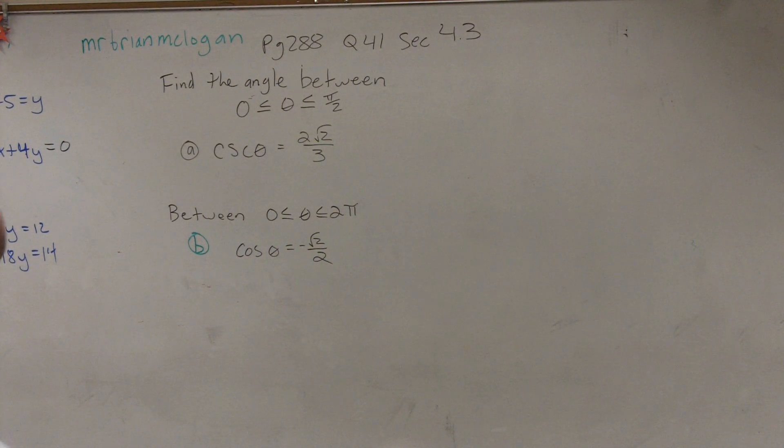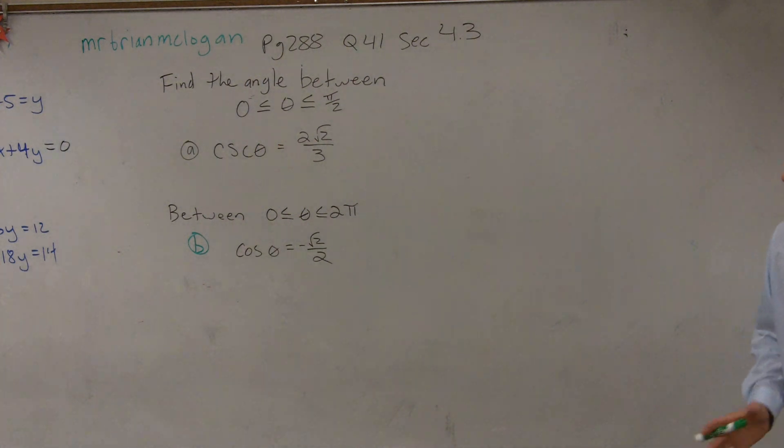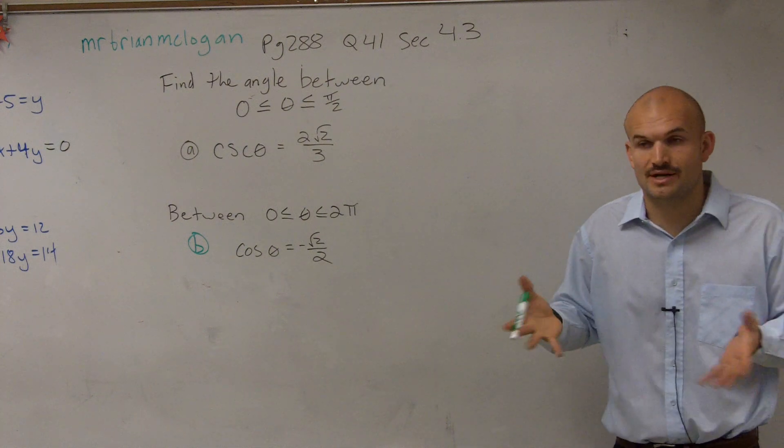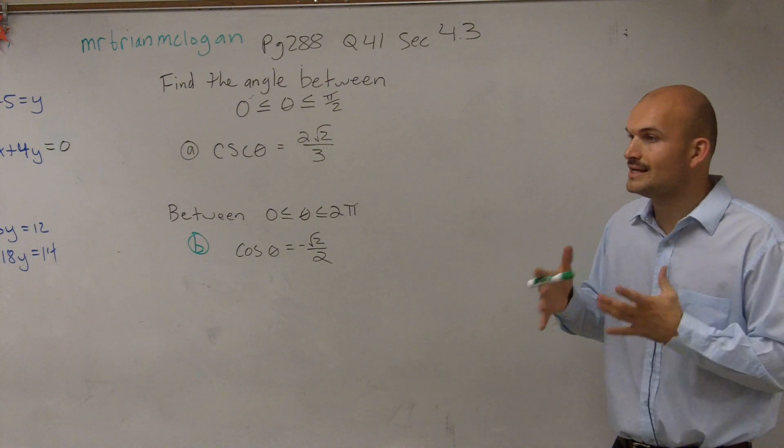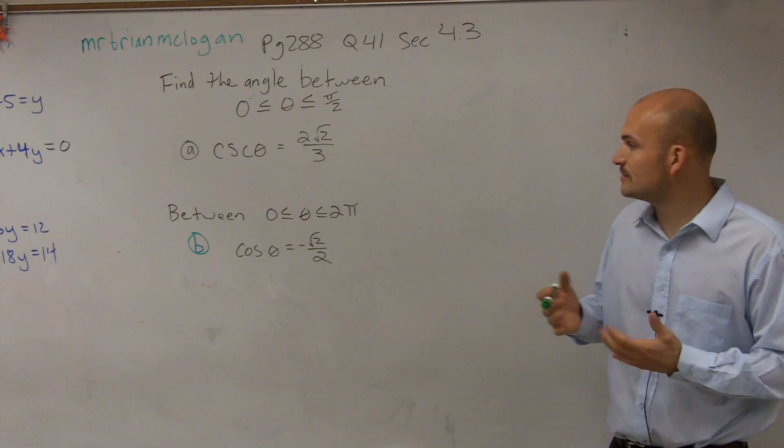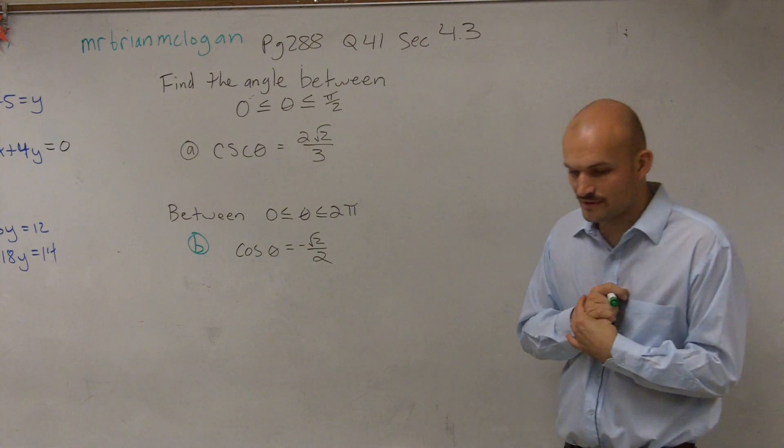So ladies and gentlemen, what we have right now is we're given find the angle between 0 and theta that is less than or equal to π/2. And then they give us the cosecant of the angle is equal to 2√2 over 3. And then they say find an angle between 0 and 2π where cosine of theta is equal to negative 2√2.